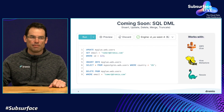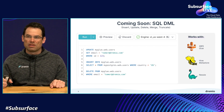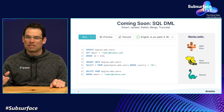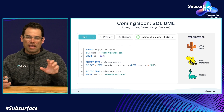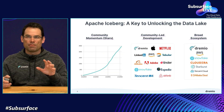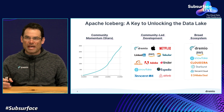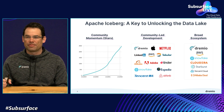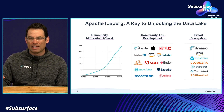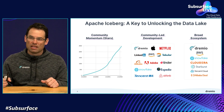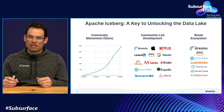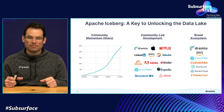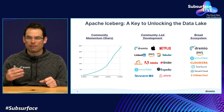This DML is powered by an open-source project called Apache Iceberg, which I think is the key to unlocking the data lake. Apache Iceberg is a table format built on top of Parquet that provides the metadata so that you can start thinking of your data not as files, but as tables. It's been getting a ton of momentum and traction in the community.